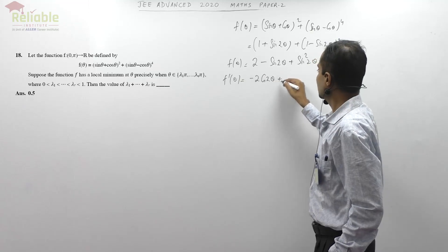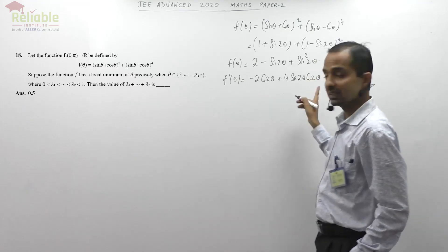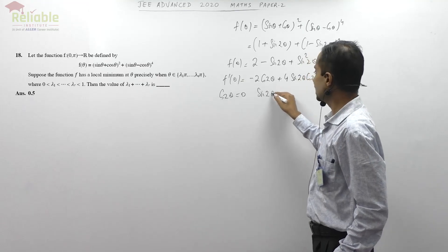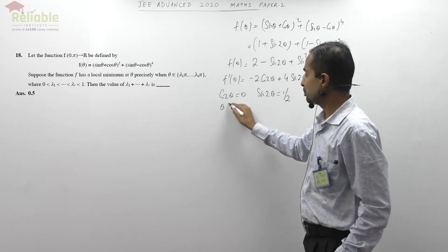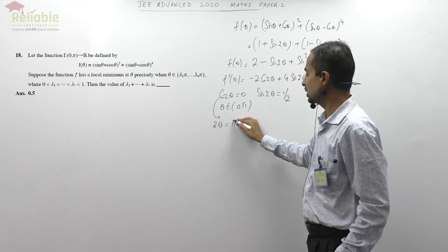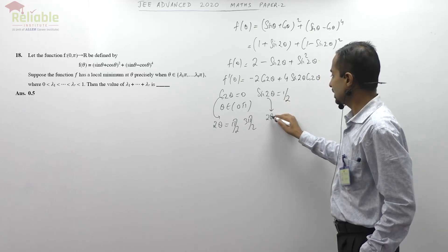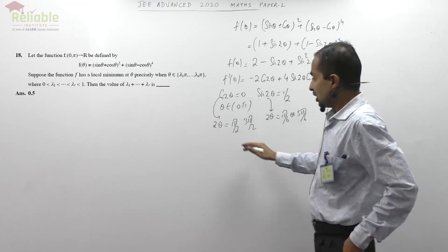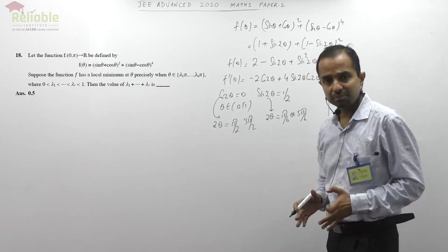Differentiating to find local minima and maxima: f'(θ) = -2cos2θ + 4sin2θ·cos2θ = 0. Setting to zero: cos2θ = 0 or sin2θ = 1/2. Since θ ∈ (0,π), we have 2θ ∈ (0,2π). For cos2θ = 0: 2θ = π/2 or 3π/2, giving θ = π/4 or 3π/4. For sin2θ = 1/2: 2θ = π/6 or 5π/6, giving θ = π/12 or 5π/12.